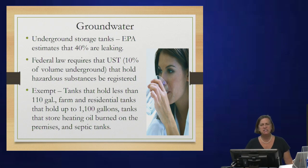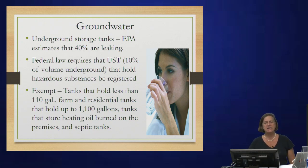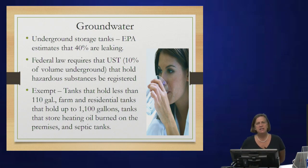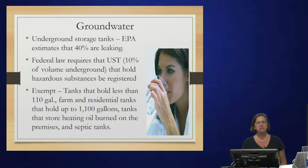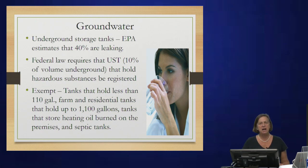Let's say you buy a house in the country right next door to a country store with gas pumps — you should have your well checked for both organic and inorganic substances. Federal law requires underground storage tanks — those that store at least 10% of their volume underground — to be registered. Exemptions include tanks holding less than 110 gallons, farm and residential tanks holding up to 1,100 gallons, tanks storing heating oil burned on the premises, and septic tanks.